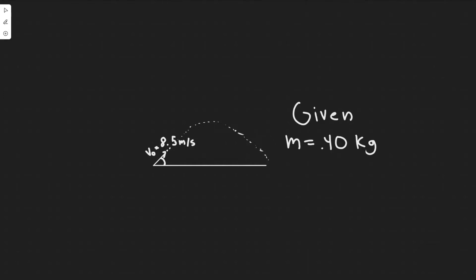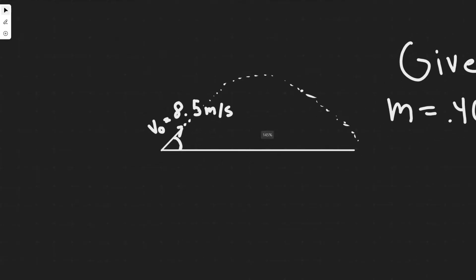In this problem we're told that a 0.4 kilogram ball is thrown with the speed of 8.5 meters per second at an upward angle of 36 degrees. What is its speed at the highest point, and how high does it go? We're going to use conservation of energy.